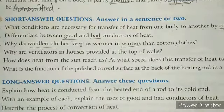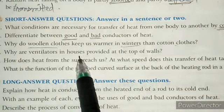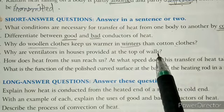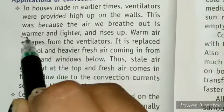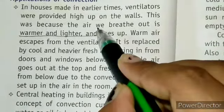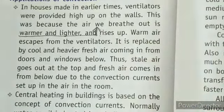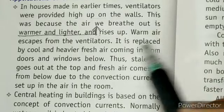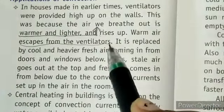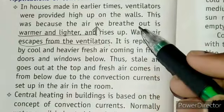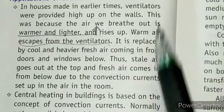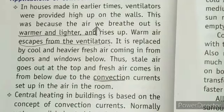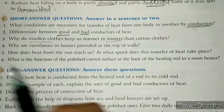The next question: why are ventilators in houses provided at the top of the walls? Ventilators are placed high on the walls because the air we breathe out is warmer and lighter, so it rises up. This warm air escapes from the ventilators, and the hot air going upward makes our room cooler by the convection method.